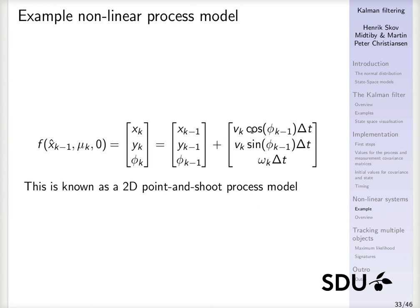So therefore, we should update the x and y coordinates using the vk times cosine and vk times sine, and both times the time step. And the orientation of the vehicle should be updated with angular velocity, phi k, or omega k, multiplied with the time step.